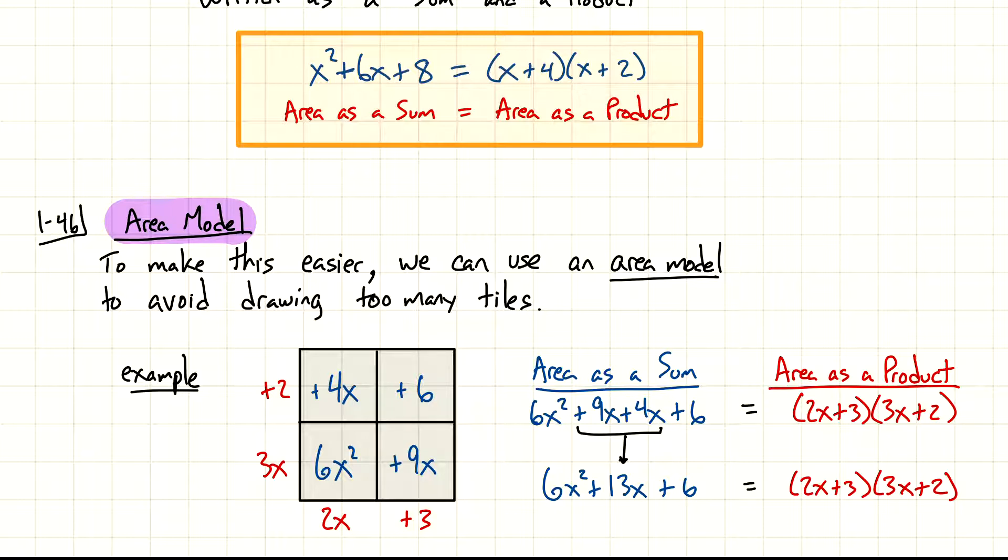If I know that the area is the inside, then remember the outside dimensions can help us get the area as well. So, just like kind of a multiplication table, if I multiply the dimensions 2x and 3x, that gives me 6x squared. 2x and 2 gives me 4x. And then 3 and 3x gives me 9x. And then the last one, 3 and 2, gives us 6.